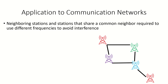Interestingly, proper colorings of graph squares and hypergraph strong colorings see applications in communication networks. In this application, stations are modeled as vertices, and neighboring stations as well as stations that share a common neighbor are required to have different frequencies to avoid interference.